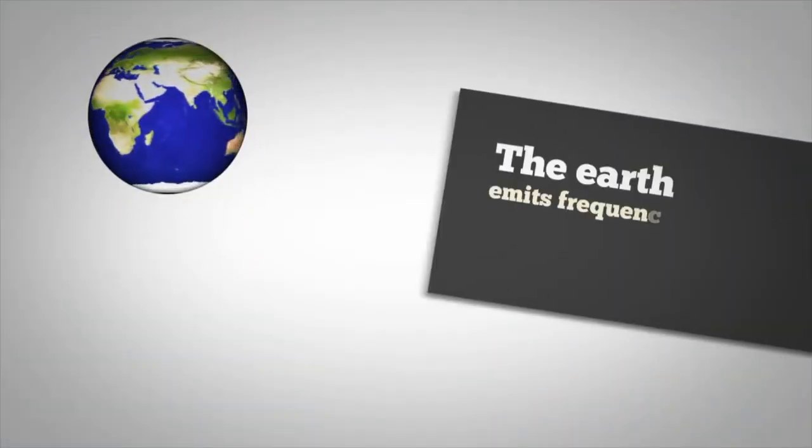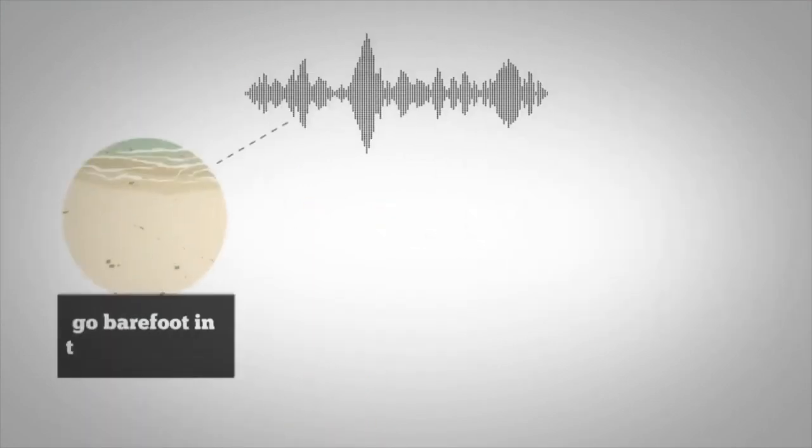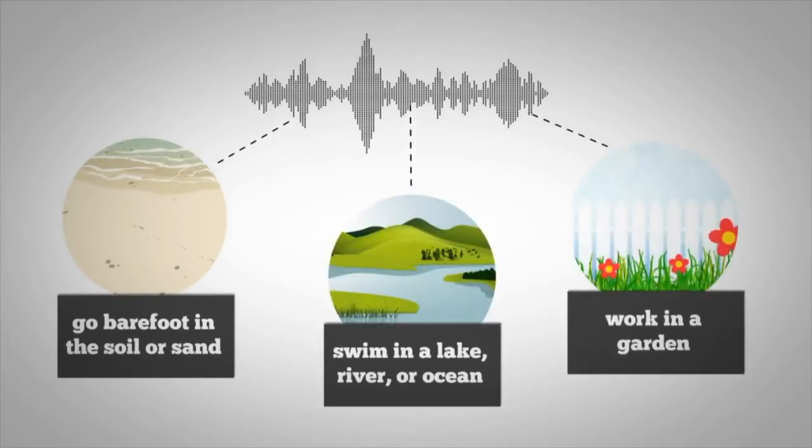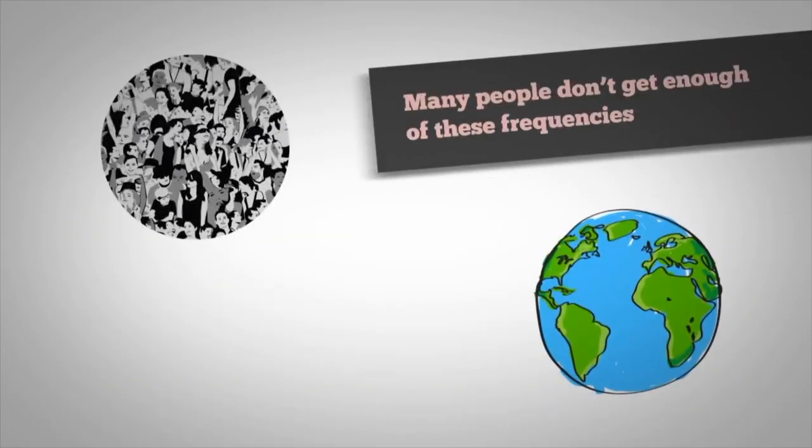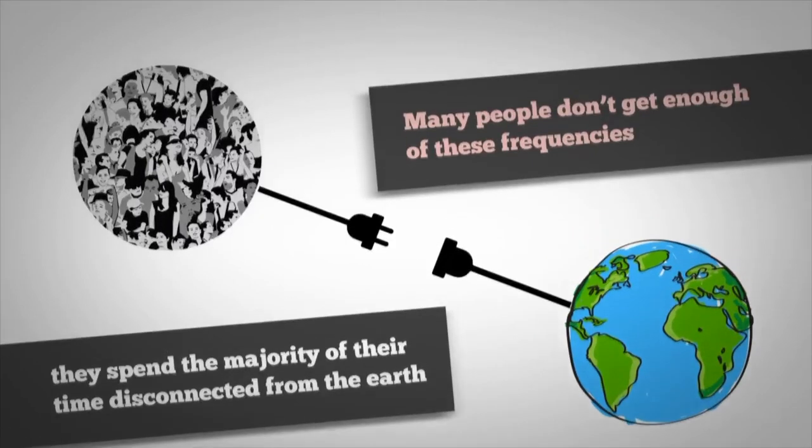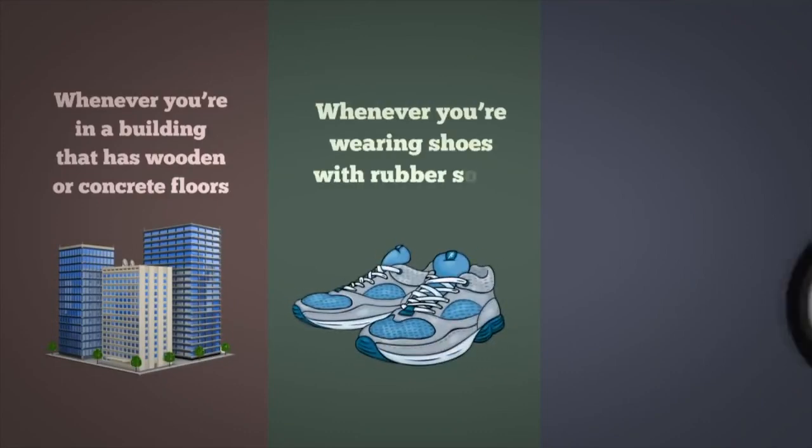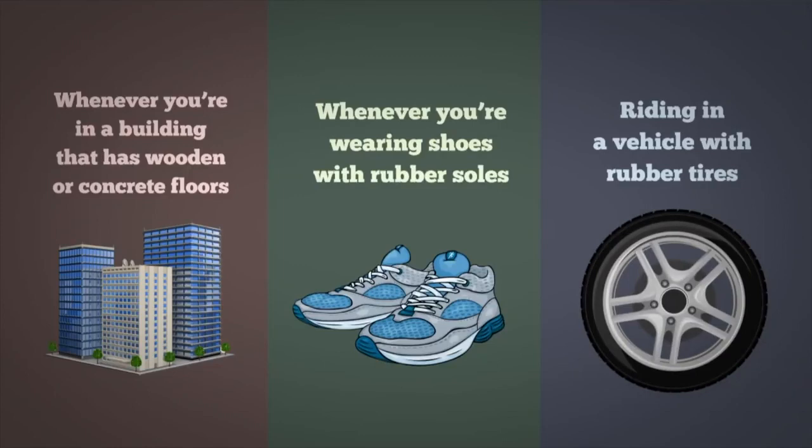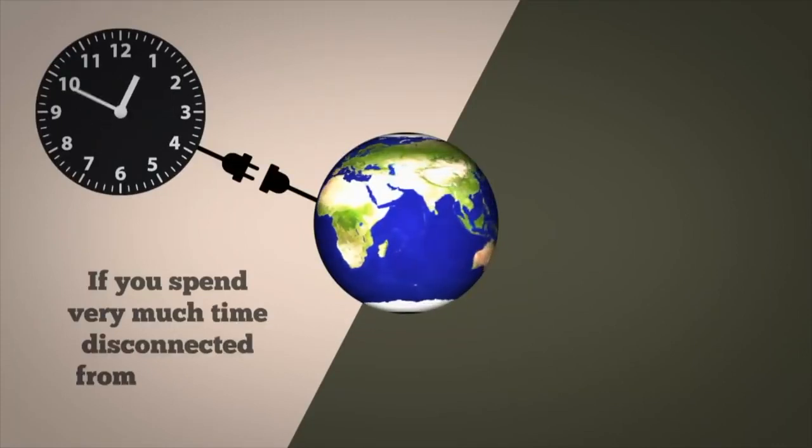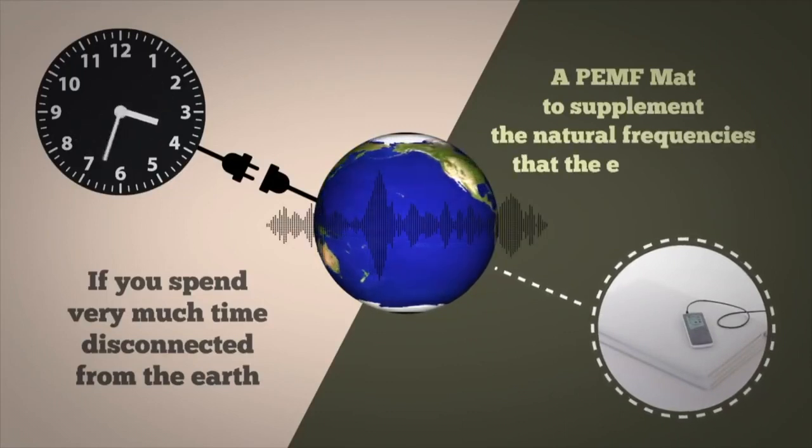The Earth emits frequencies that our bodies need in order to be healthy. You can absorb these frequencies by going barefoot in the soil or sand, swimming in a lake, river or ocean, or working in a garden. Many people don't get enough of these frequencies because they spend the majority of their time disconnected from the Earth. Whenever you're in a building that has wooden or concrete floors, whenever you're wearing shoes with rubber soles or riding in a vehicle with rubber tires, then you're disconnected from the Earth and its frequencies. If you spend very much time disconnected from the Earth, then you should consider using a PEMF mat to supplement the natural frequencies that the Earth emits.